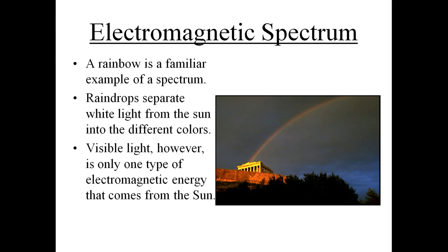A rainbow is a familiar example of a spectrum. Raindrops separate white light from the sun into the various colors. Visible light, however, is just one type of electromagnetic energy that comes from the sun.